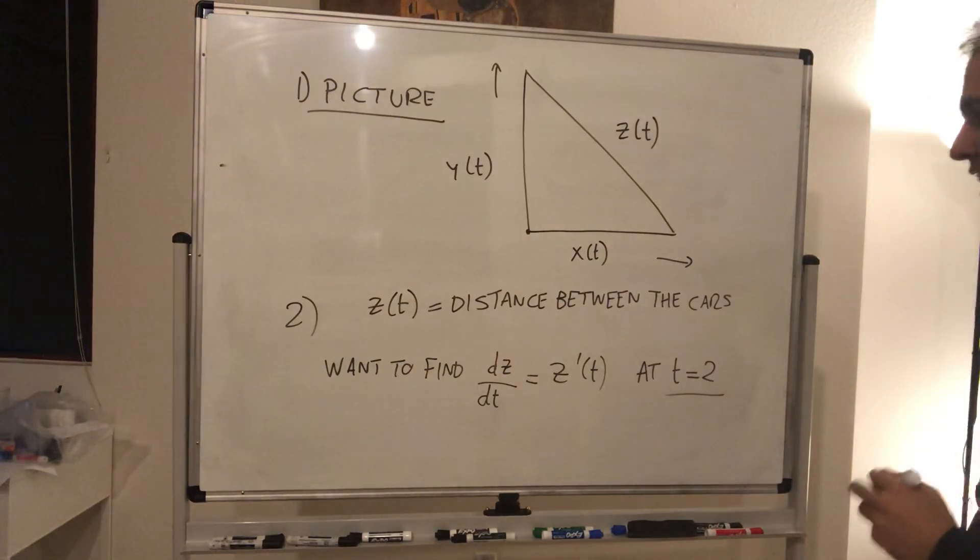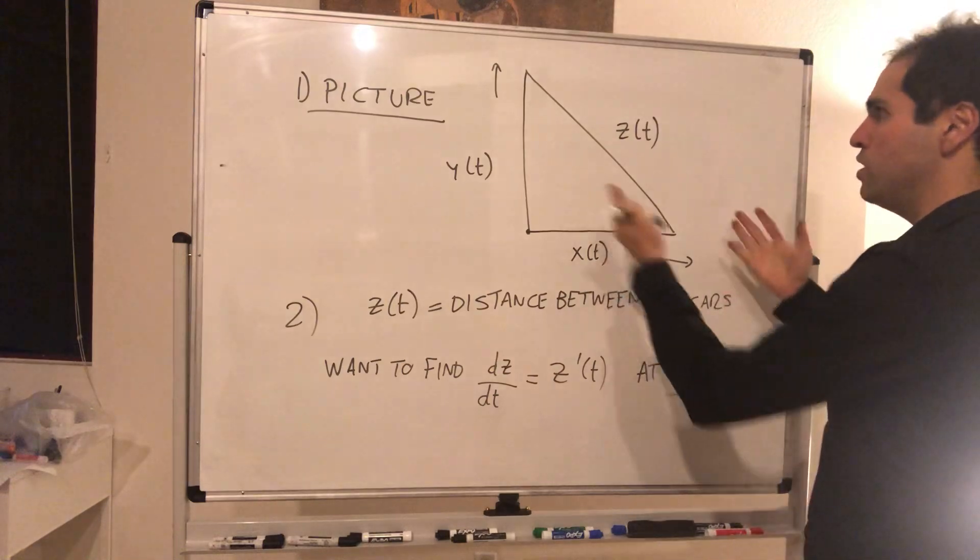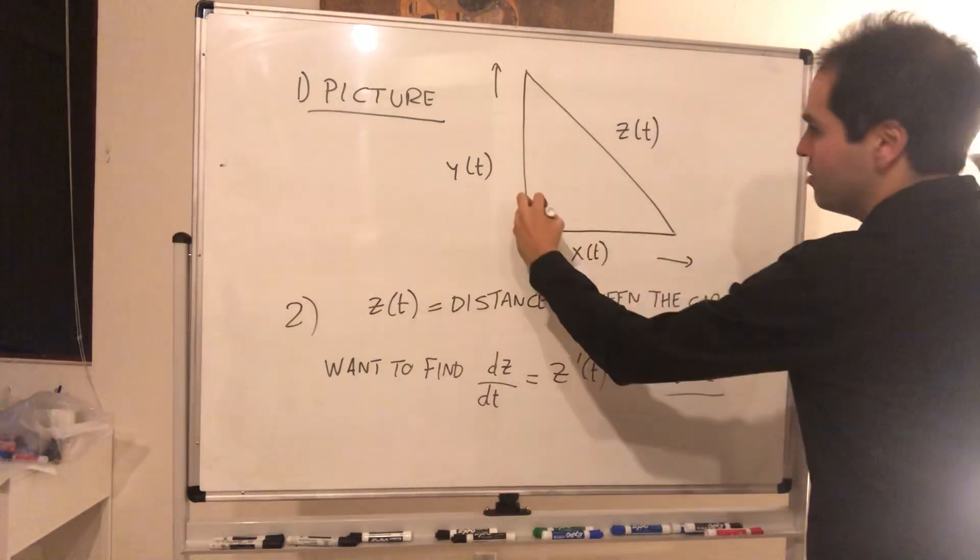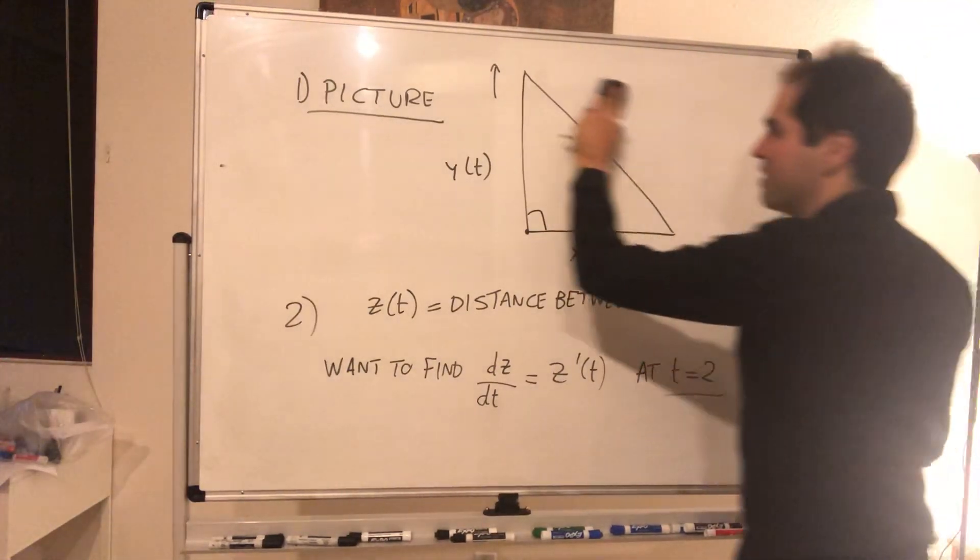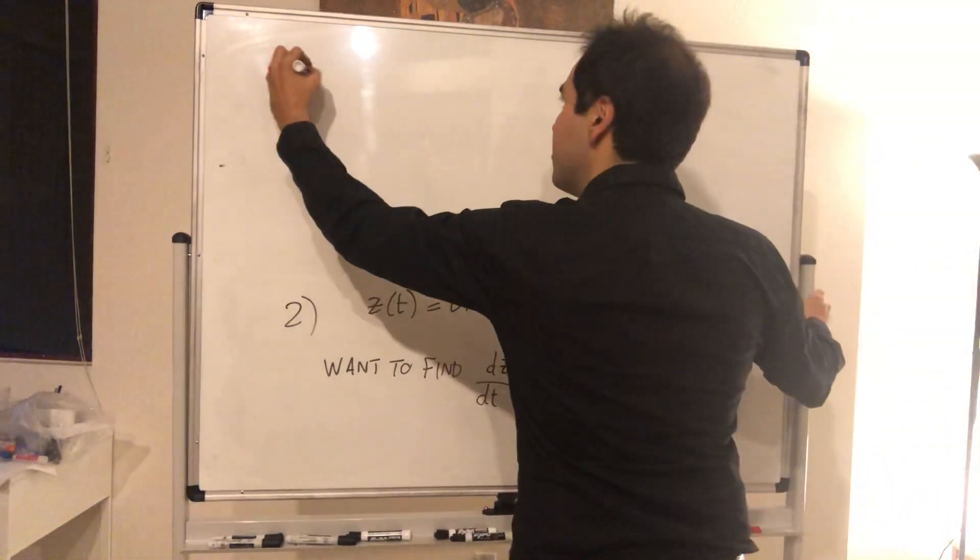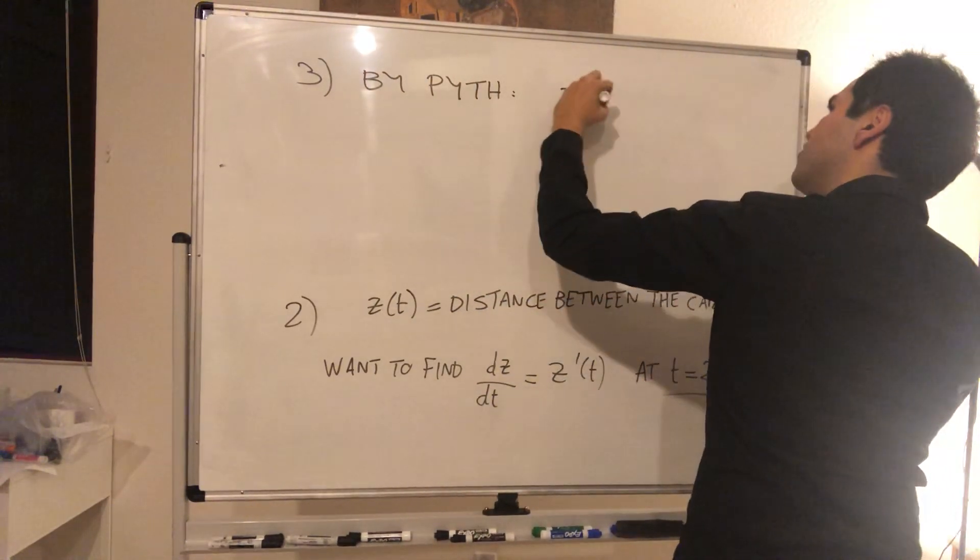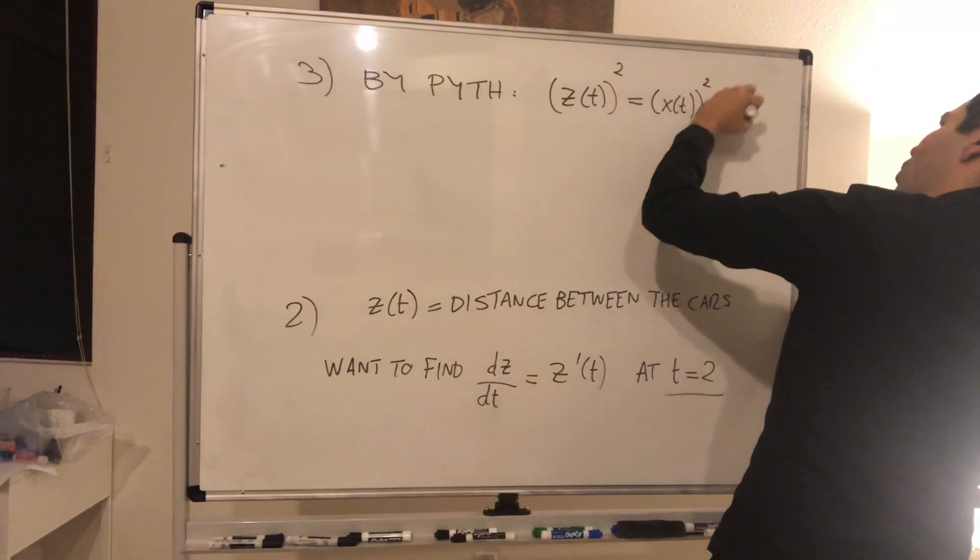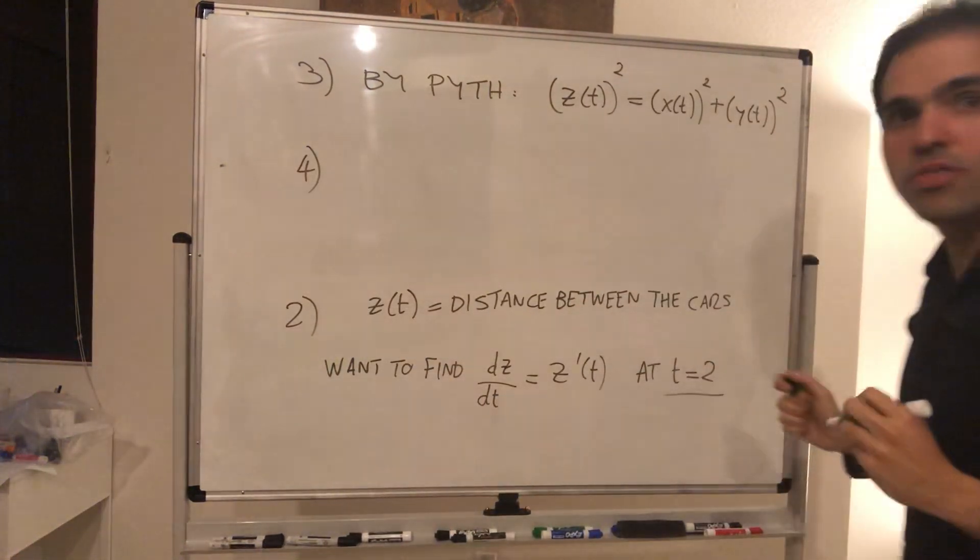That is what we want to do, we want to find z prime of two. And now what we need to do, we need to find some equation that relates all our quantities. Well notice we have a right triangle with x, y, and z, so it's good to use the Pythagorean theorem. So in other words, by the Pythagorean theorem, what do we know? We know z of t squared equals x of t squared plus y of t squared.